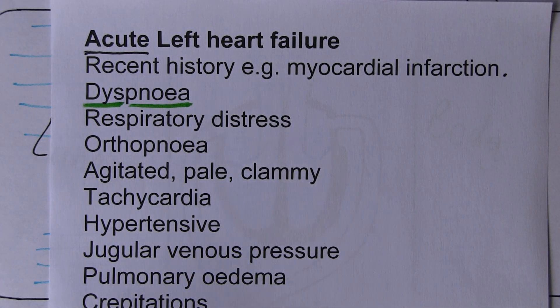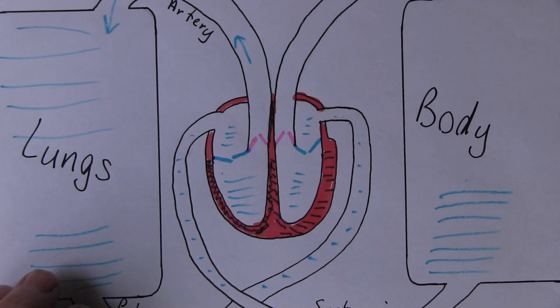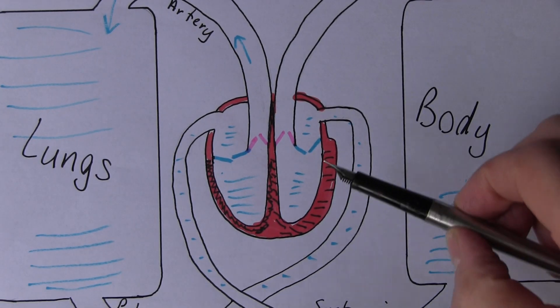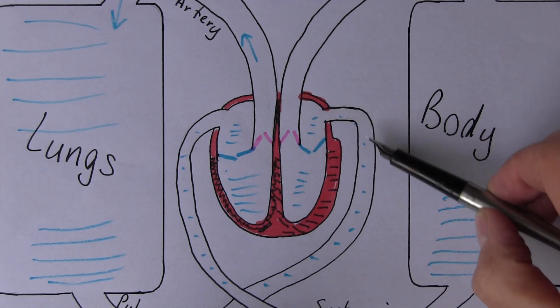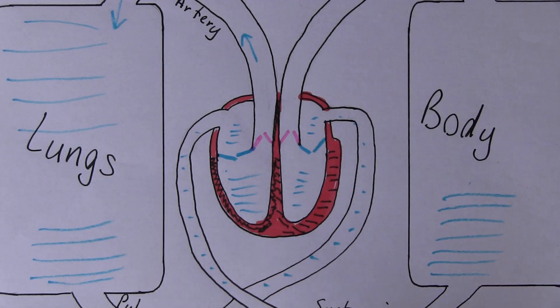With left ventricular failure, we get a damming back of blood to the lungs leading to pulmonary edema.